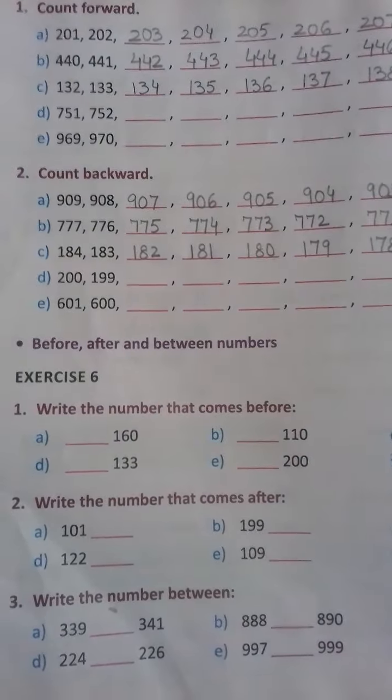Part C: 184, 183. What comes before 183? 182. Next, 181, 180. Before this number what comes? 179. Next, 178. Parts D and E, you can try yourself, children.